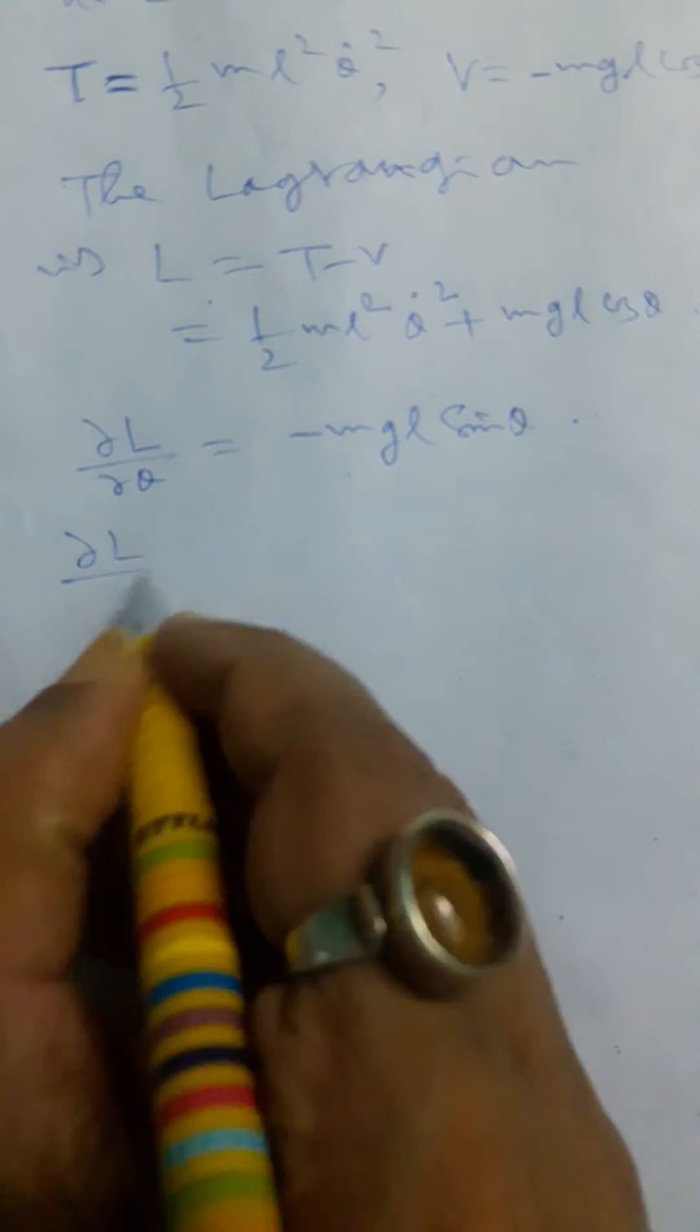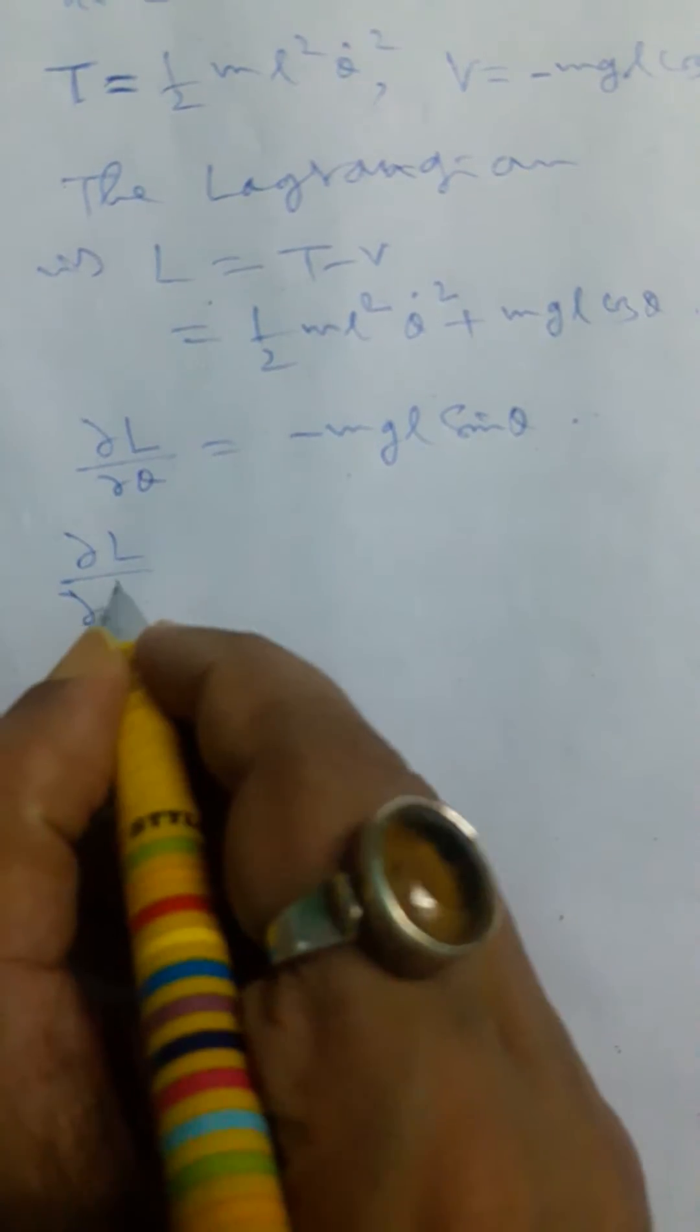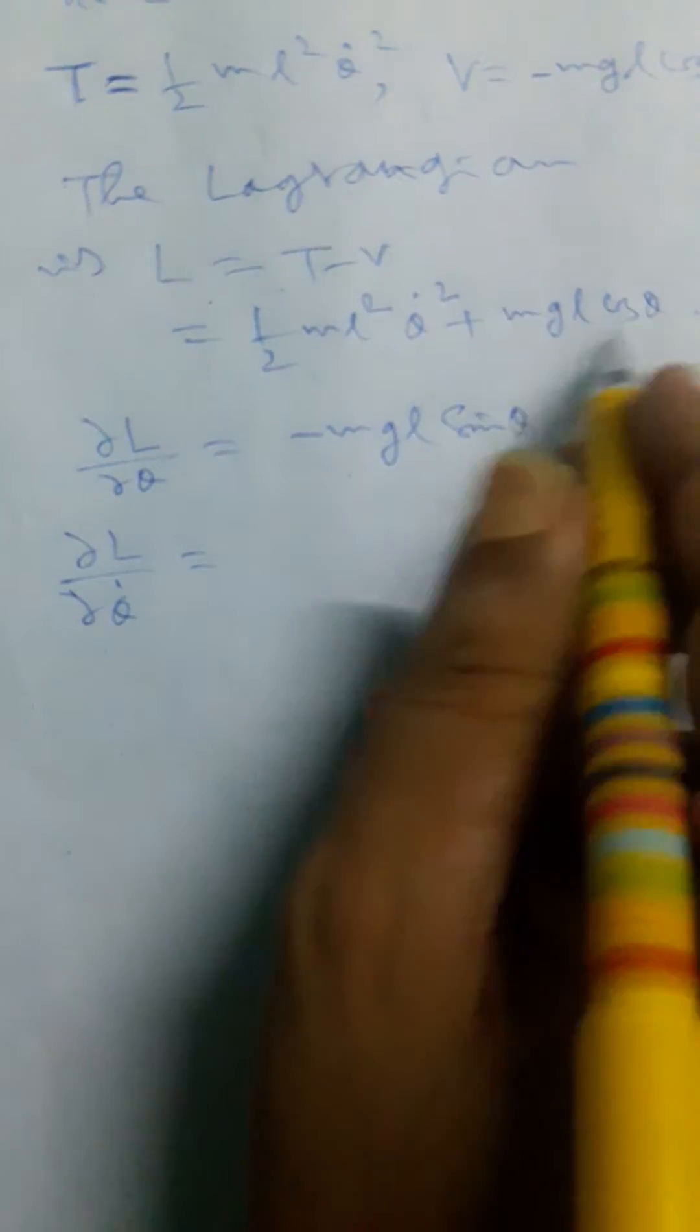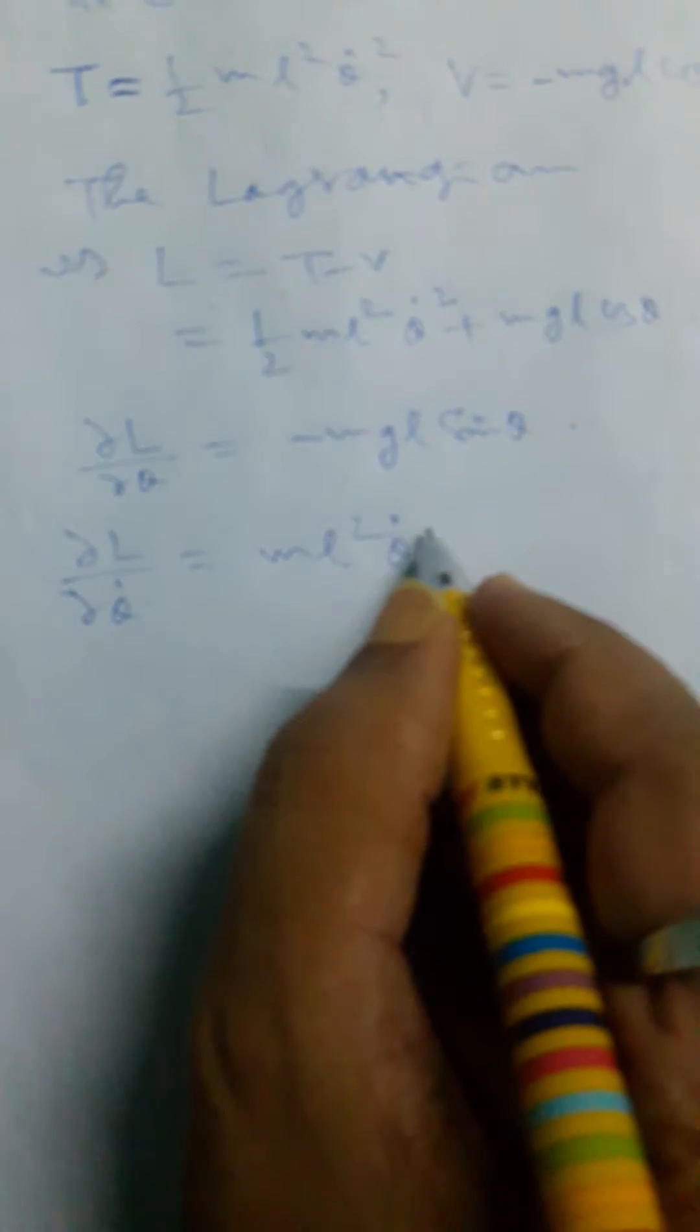And another derivative ∂L/∂θ̇. So the second term will be zero and the first term will be ML² into θ̇.